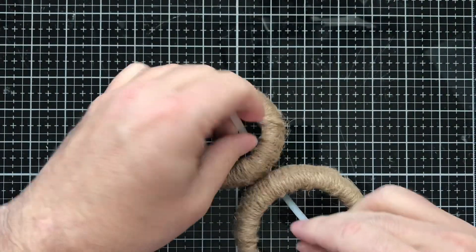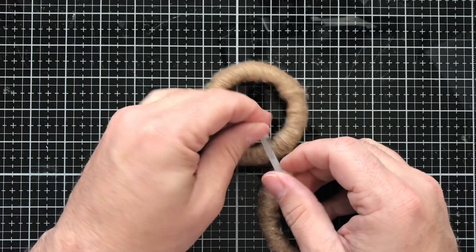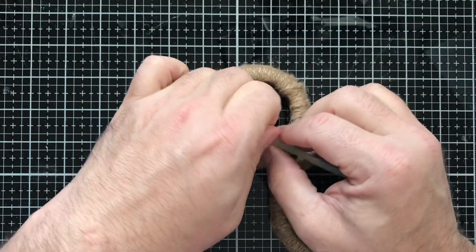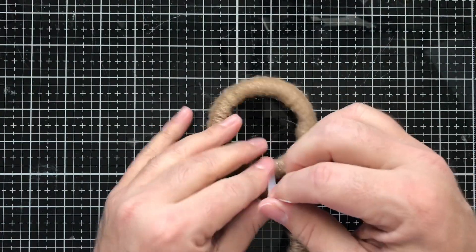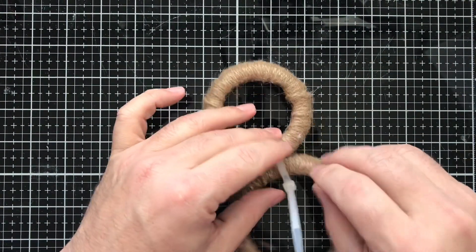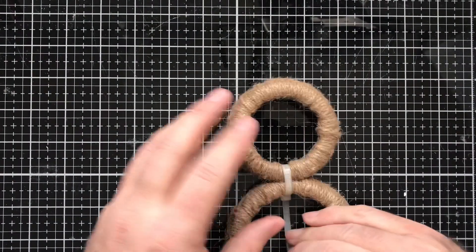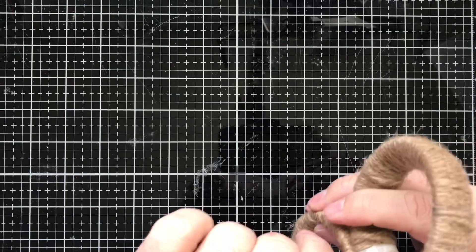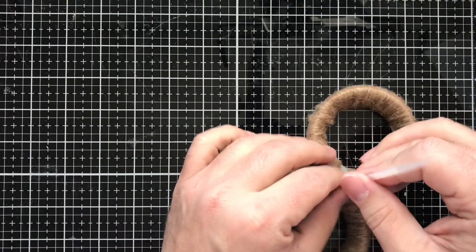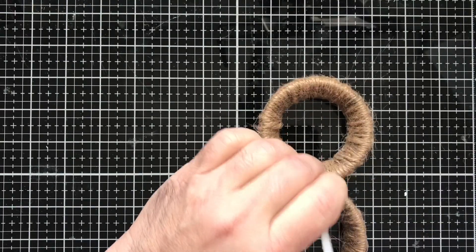So you can hot glue it if you want this to be a permanent ornament in your holiday Christmas decoration. I'm going to pull that tight and it's got a little bit of room, so I'm going to pull it into the back because that's where I want that piece to be and we're just going to trim that excess off with a pair of scissors.